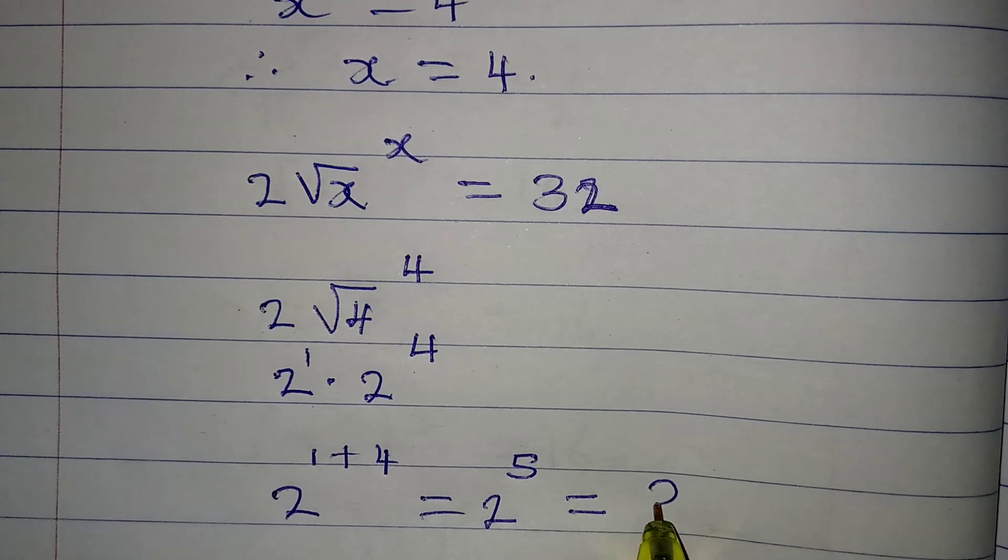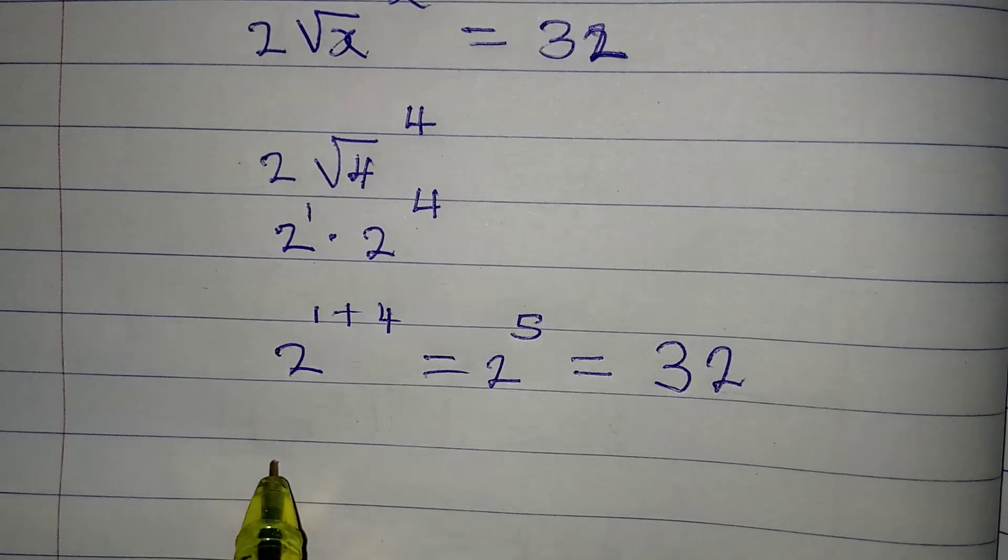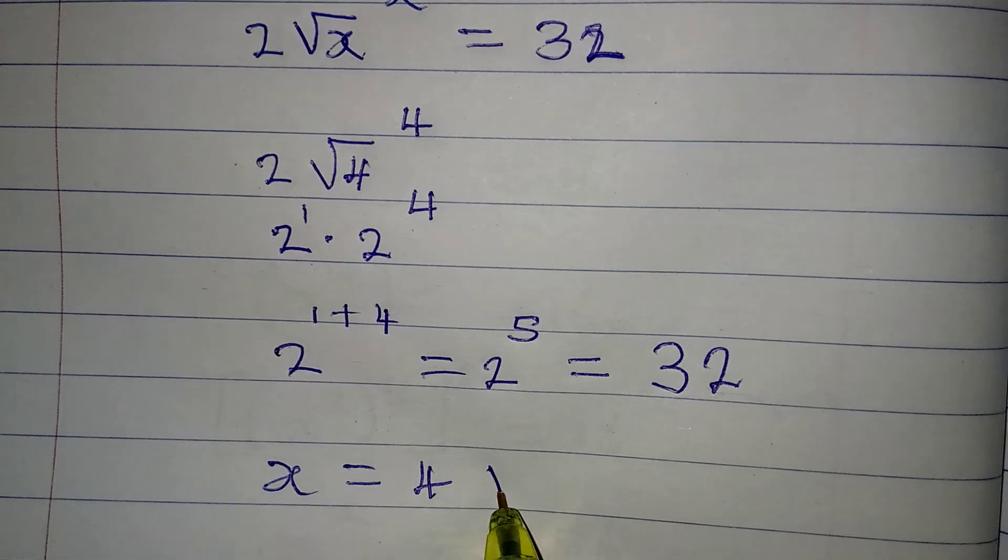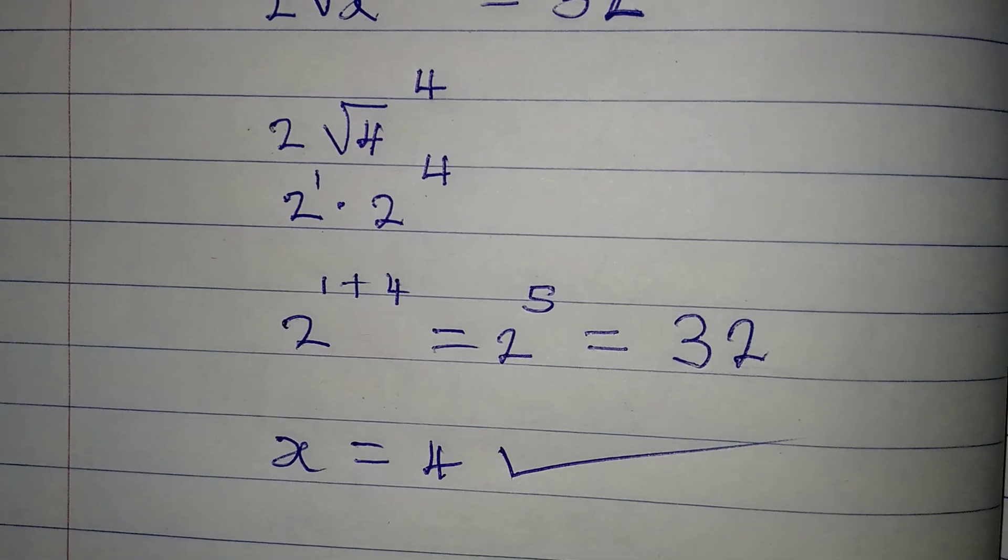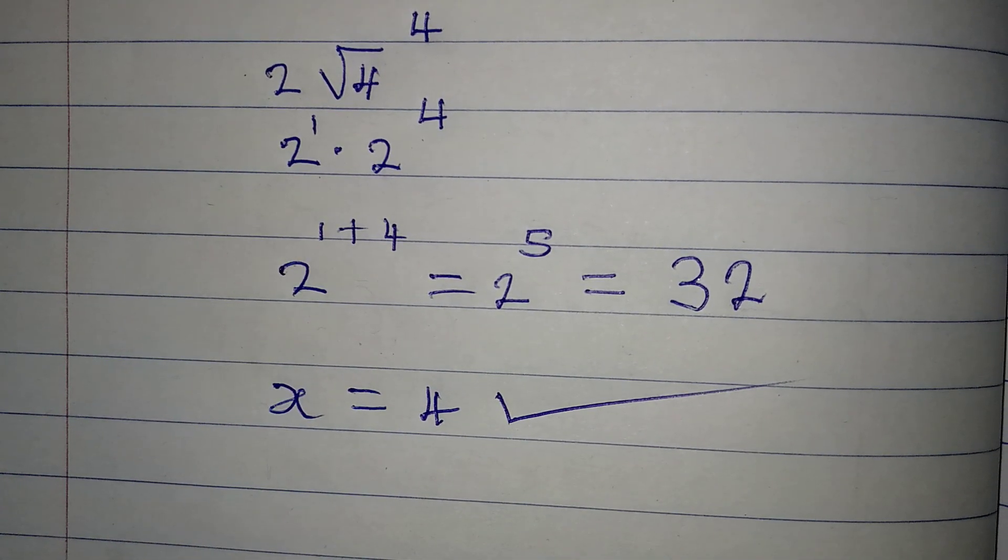And 2 to the power of 5 is 32, and this means that our x to be equal to 4 is valid as it satisfies the given equation. Thank you for watching.